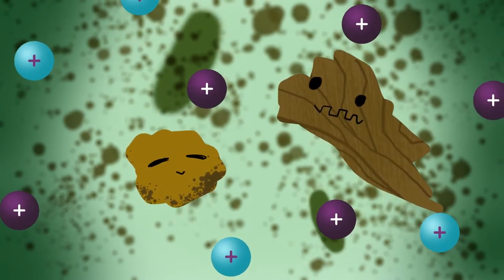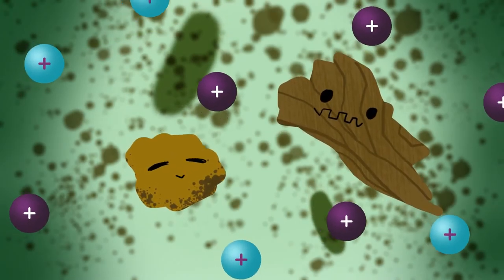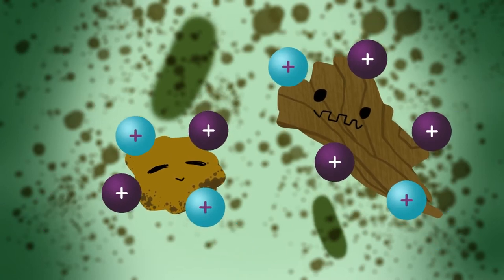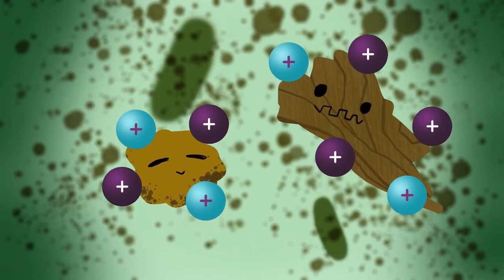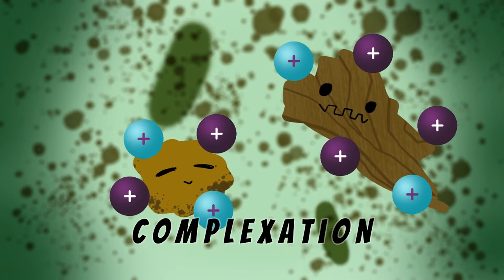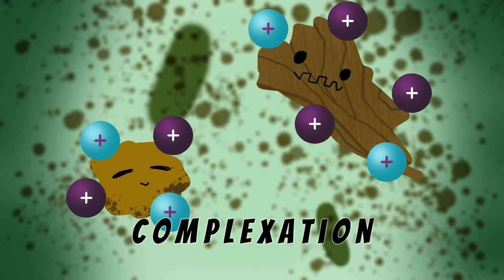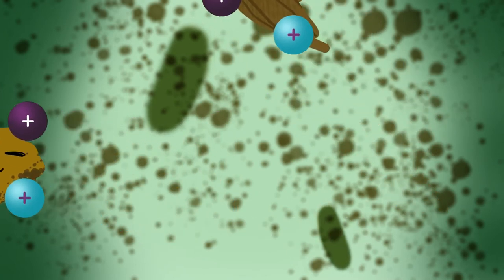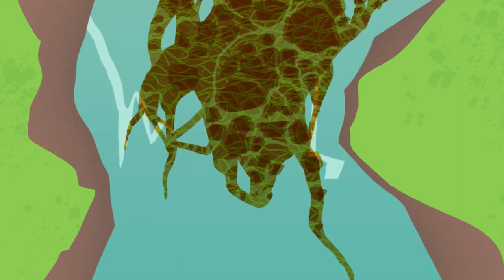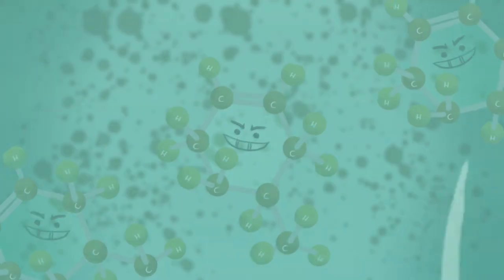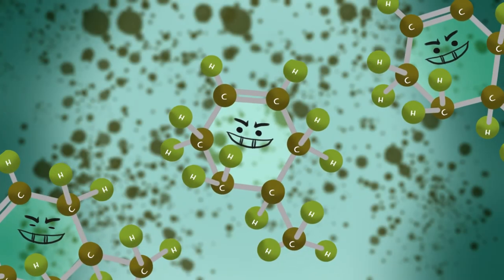Contaminants can hold onto, or sorb, the clay and organic matter that is suspended in muddy-looking waters. Some scientists refer to this as complexation. Of course, some chemicals can completely dissolve in water, so just because the stream looks clear, it doesn't necessarily mean that it isn't contaminated.